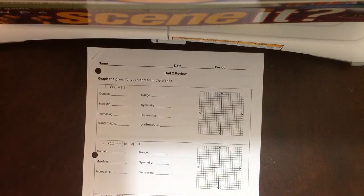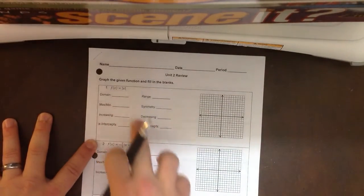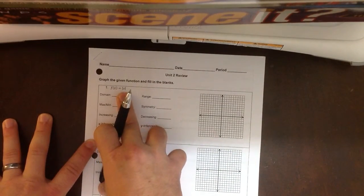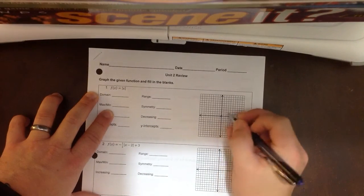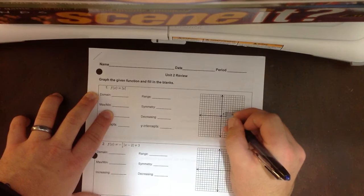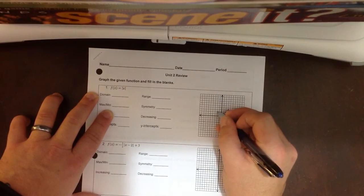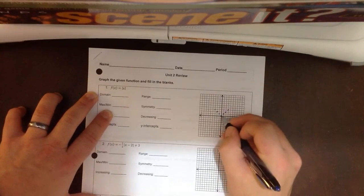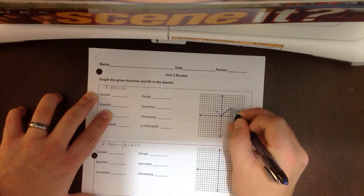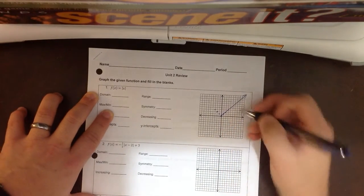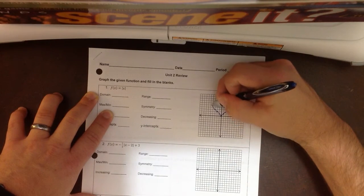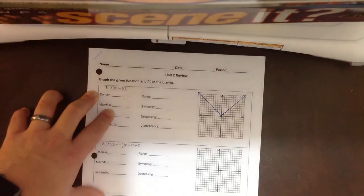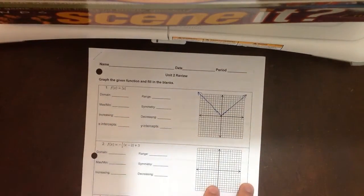Alright, time to get ready for our unit 2 test. The first one, these are the attributes of the parent function f of x equals absolute value of x. That's the parent function that starts at 0, 0, and my slope is 1. Not the best graph, but that'll work.